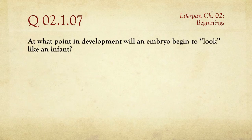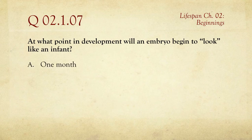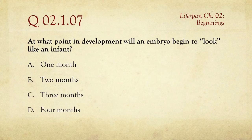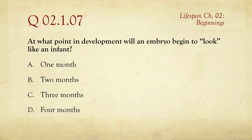Number seven: at what point in development will an embryo begin to look like an infant — one month, two months, three months, or four months? Embryos are very small in the beginning, but it doesn't take long for them to start looking identifiably human. The answer is B — at two months.